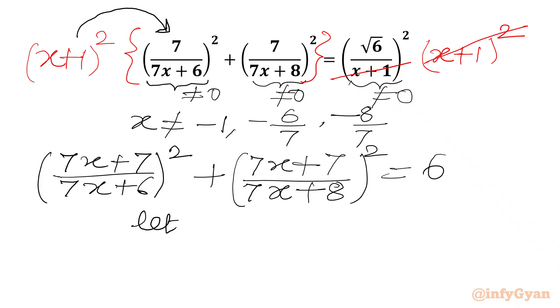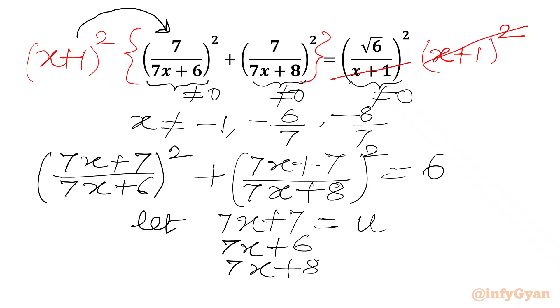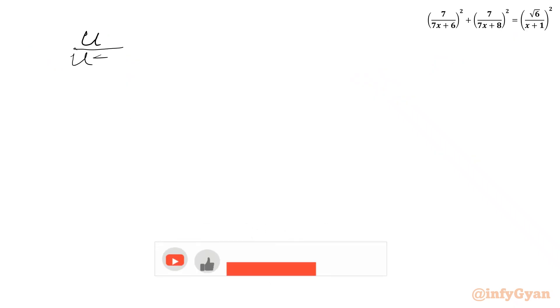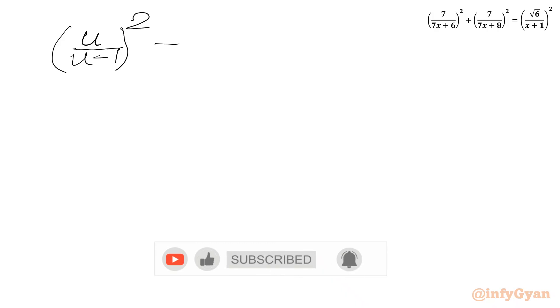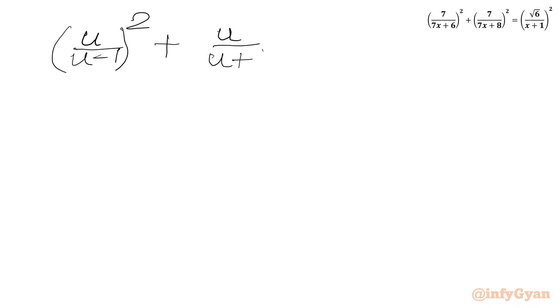Now it is substitution time. Let us say 7x+7 equal to u. From here we can write 7x+6 as u minus 1 and 7x+8 as u plus 1. So our equation converts to: u over (u−1), whole square, plus u over (u+1), whole square, equal to 6.